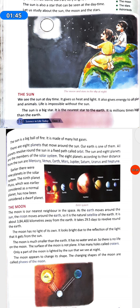The eight planets according to their distance from the sun are Mercury, Venus, Earth, Mars, Jupiter, Saturn, Uranus and Neptune. Earlier, there were nine planets in the solar system. The ninth planet, Pluto, which was earlier considered as a normal planet, has now been considered a dwarf planet.